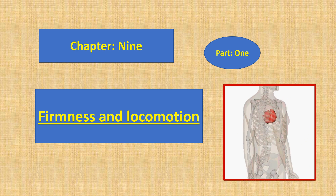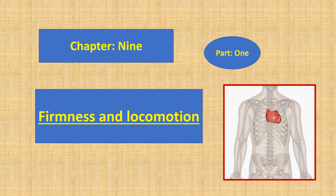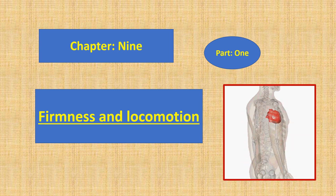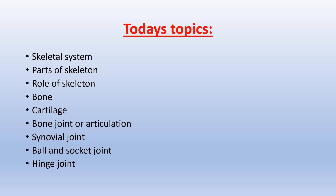Today we will discuss about Chapter 9. The name of this chapter is Firmness and Locomotion. This is Part 1 of this chapter. Our today's topics are Skeletal System, Parts of Skeleton, Role of Skeleton, Bone, Cartilage, Bone Joint or Articulation, Synovial Joint, Ball and Socket Joint, and Hinge Joint.